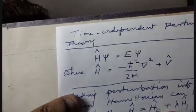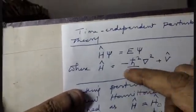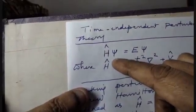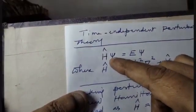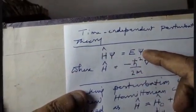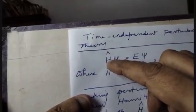Time-independent perturbation theory. The starting point is the Schrödinger equation: H-hat psi equals E psi, where H-hat is an operator.